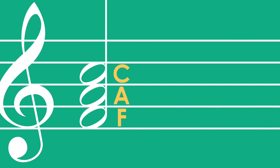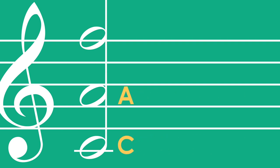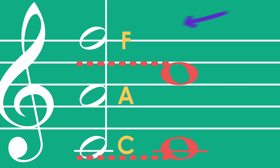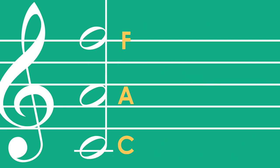Now, if we take that same chord and move the notes around a little bit, we now have an open chord. One octave above that is this C, and there is one note that is outside of this one octave range. So we can call this an open chord.